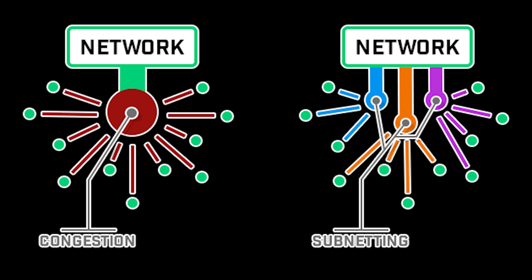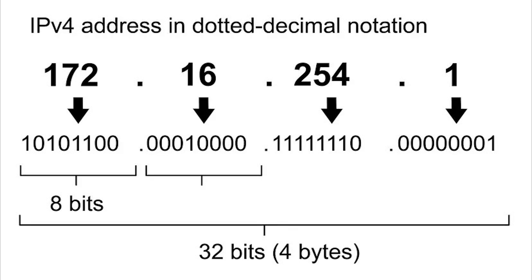Using multiple networks confines traffic to the network that it needs to be on, which reduces overall network traffic levels. Now that you understand what subnetting is and why we do it, we're actually going to go through the process of how to actually subnet.